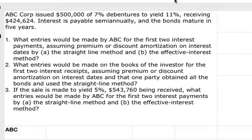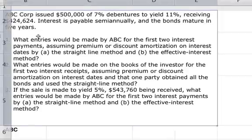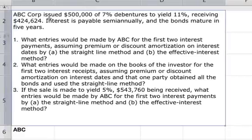In this example problem, we're going to go over discounts, or the amortization on discounts and premiums on bonds. ABC Corp issued $500,000 of 7% debentures to yield 11%, receiving $424,624. Interest is payable semi-annually and the bond matures in five years.